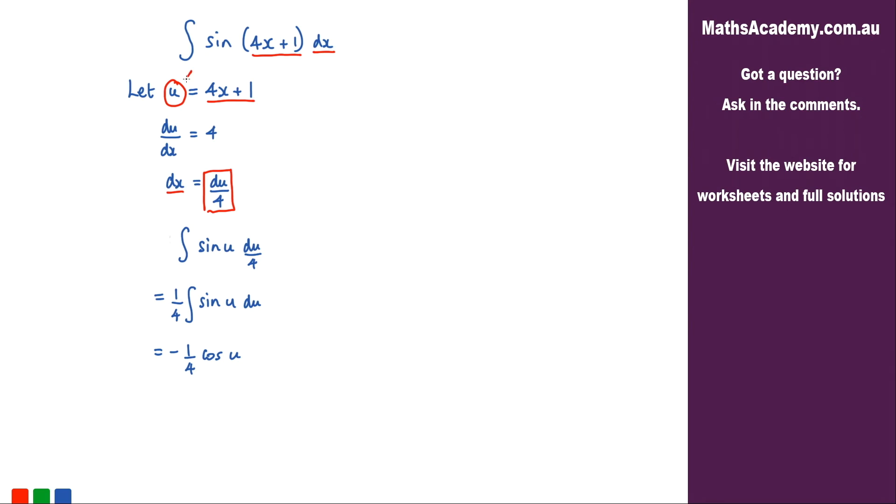Now we know that u is actually 4x plus 1. So let's substitute that back in to give negative 1 over 4 cosine of 4x plus 1. And the only thing left to do is to add on the constant of integration.